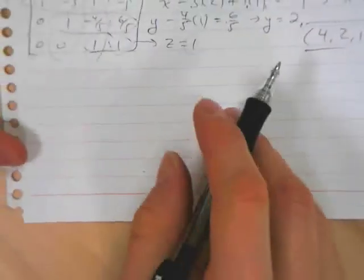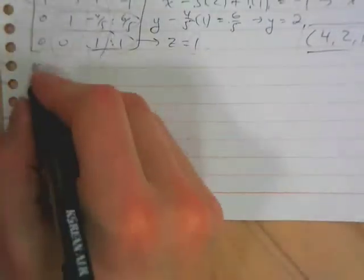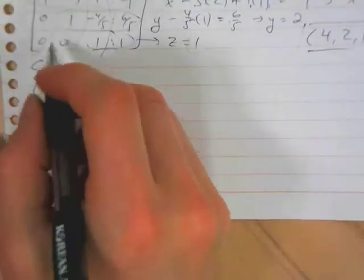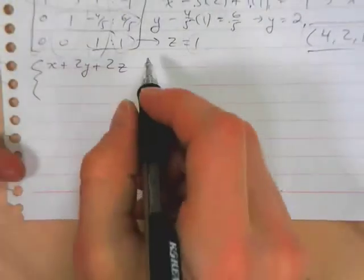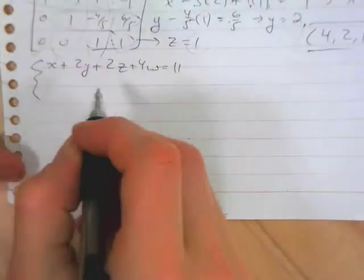I think the matrix representation of systems is especially useful when you get into bigger systems. So let's say I'm going to write small to show you how much little space you could use. Say you have a system now that has four variables and four equations.